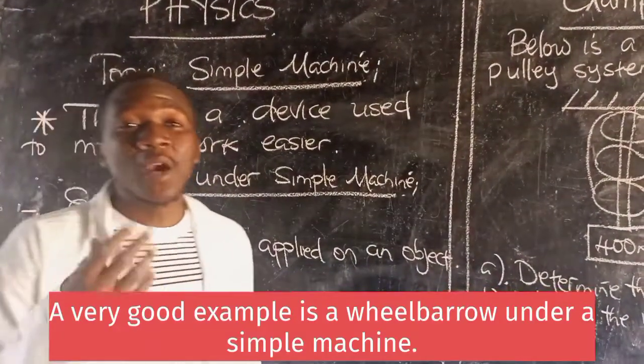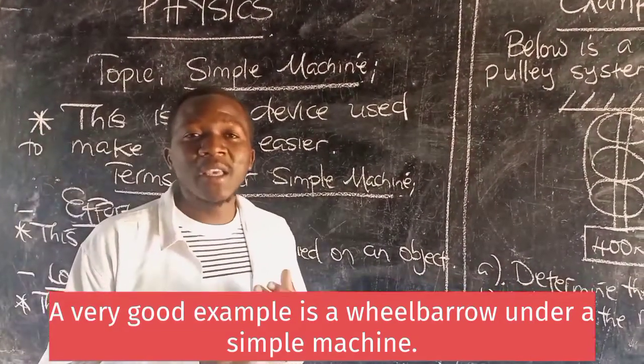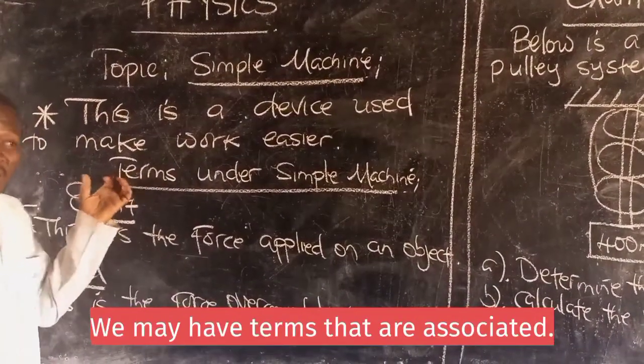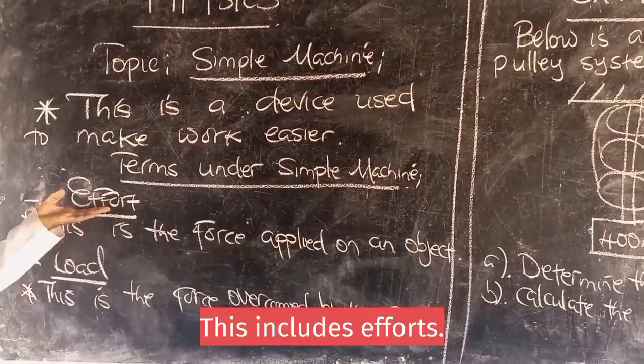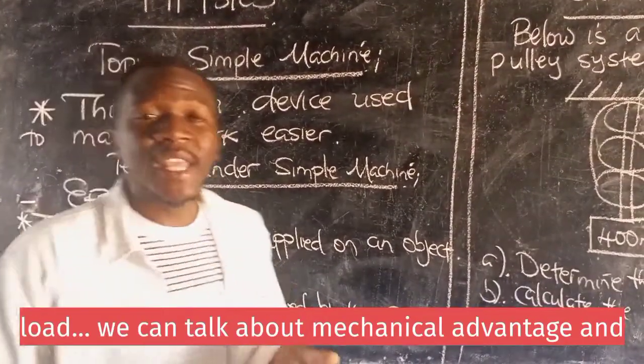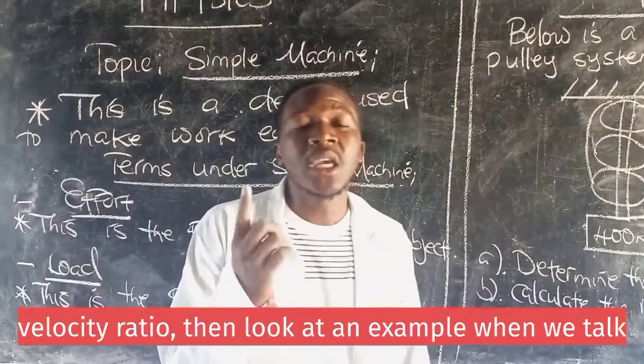A very good example is a wheelbarrow. Under a simple machine, we may have terms that are associated. This includes effort, load, we can talk about mechanical advantage, and velocity ratio.